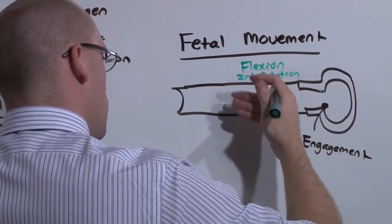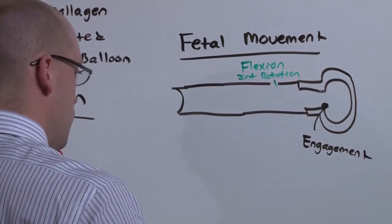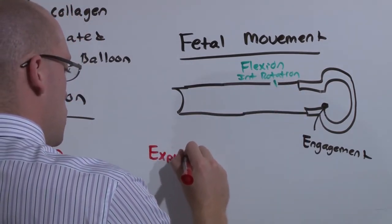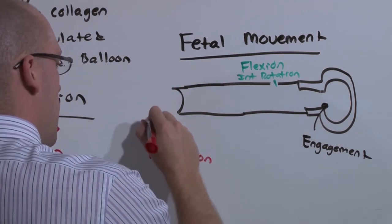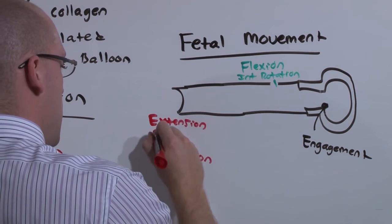It's going to drill and worm its way through the vagina. And before it exits, before it becomes expelled, expulsion is the last movement, it will have to undergo extension and external rotation.